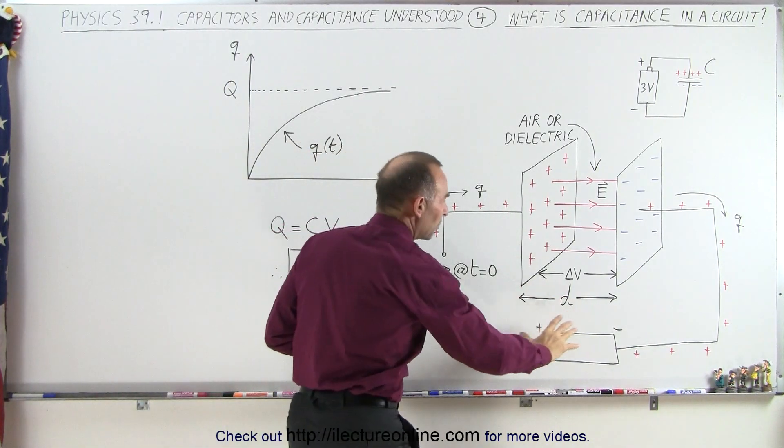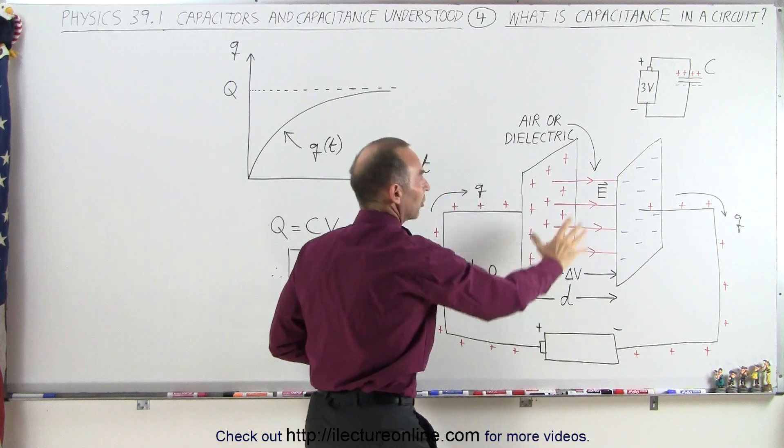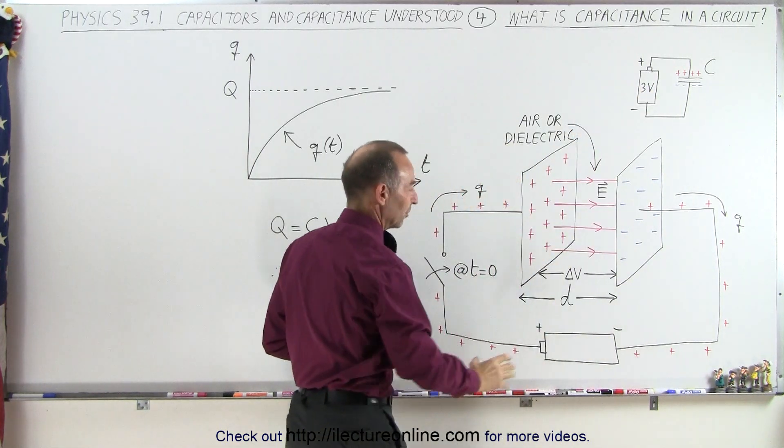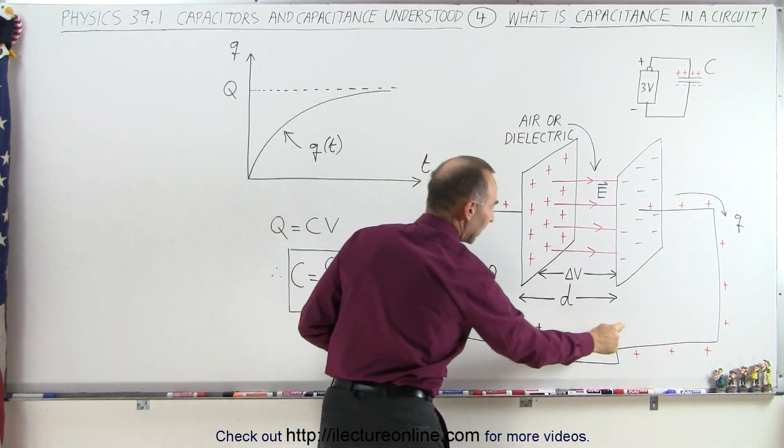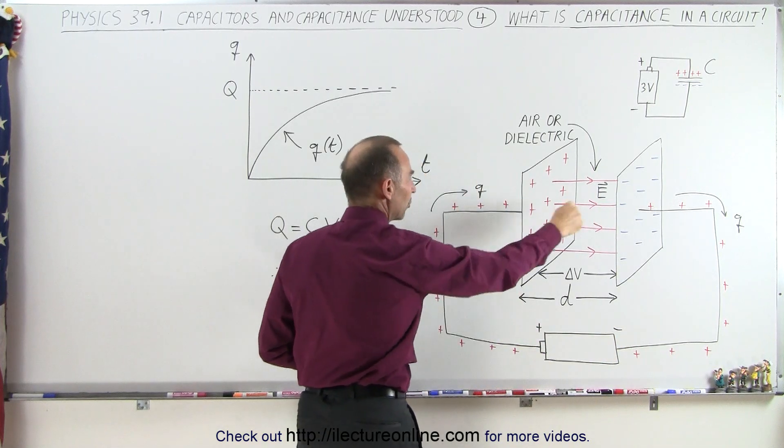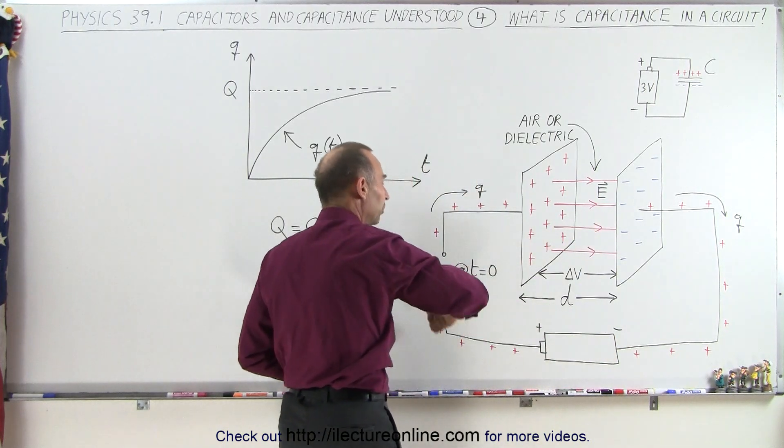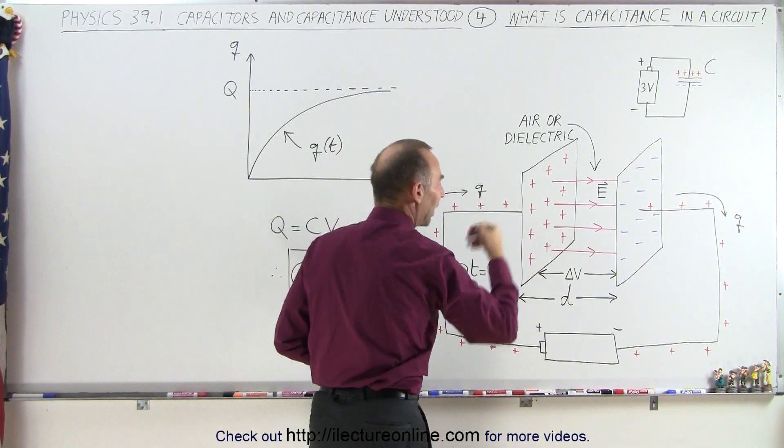So here we have a little bit more of an illustrative picture of this particular situation. We have a battery with a positive and negative terminal. It is connected to a capacitor, and so the battery will push charges onto the capacitor plate.